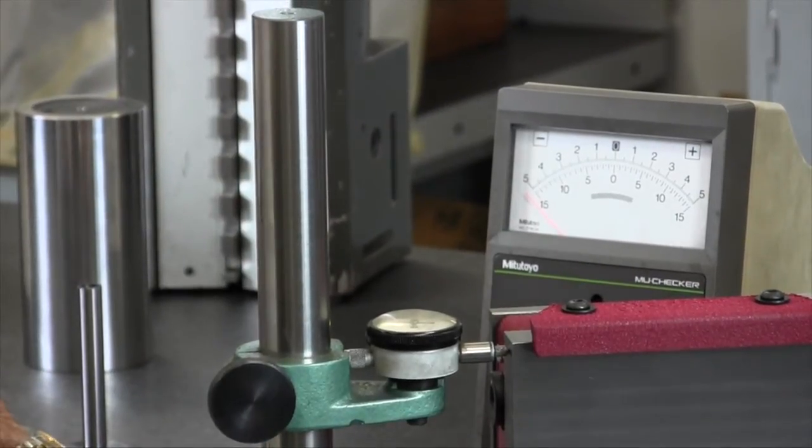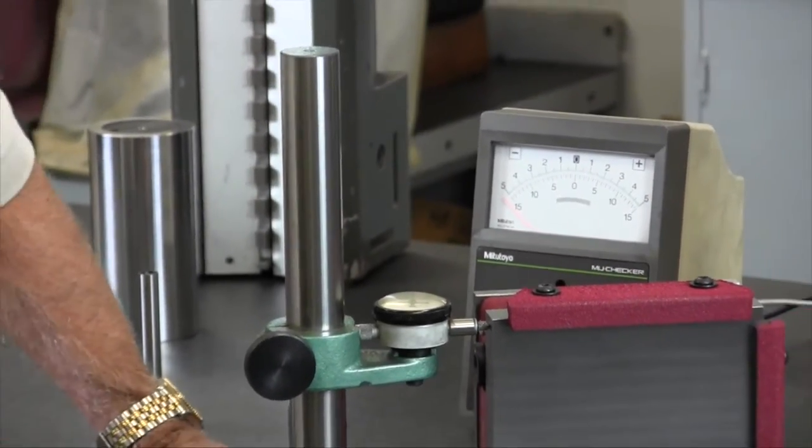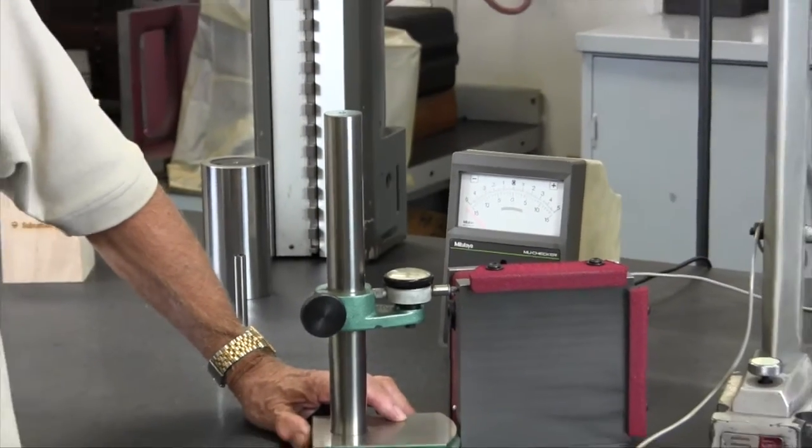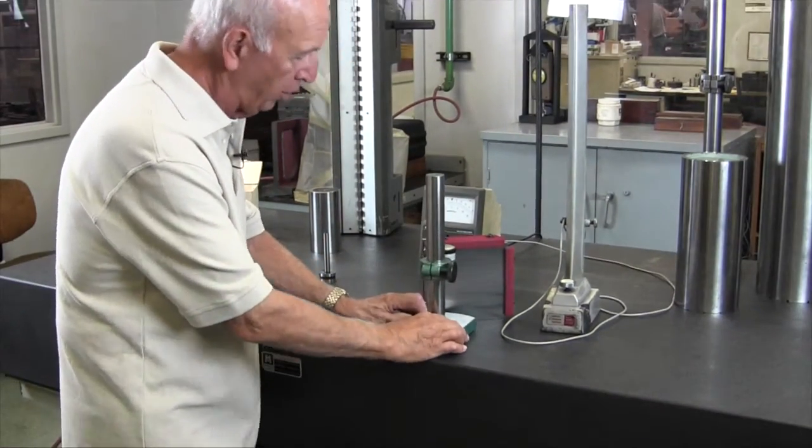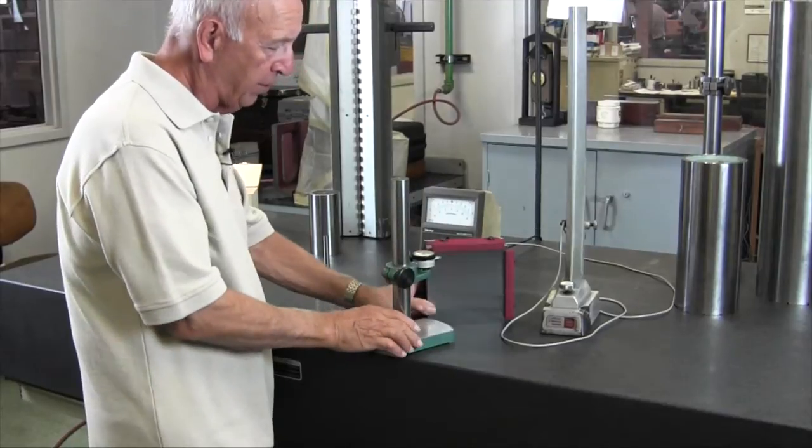Great. So that's two ways that you can check for squareness. We can also obviously check this other face, the same thing.